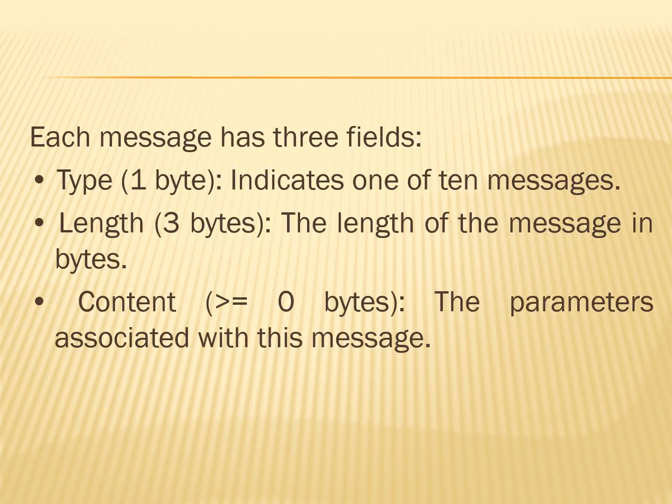The Handshake protocol consists of a series of messages exchanged between the client and server. All of these are in the format shown in the next slide. Each message has three fields: type, which is one byte and indicates one of the ten messages listed in the table; length, which is three bytes indicating the length of the message in bytes; and content, which should be greater than zero bytes — the parameters associated with this message, as listed in the table.